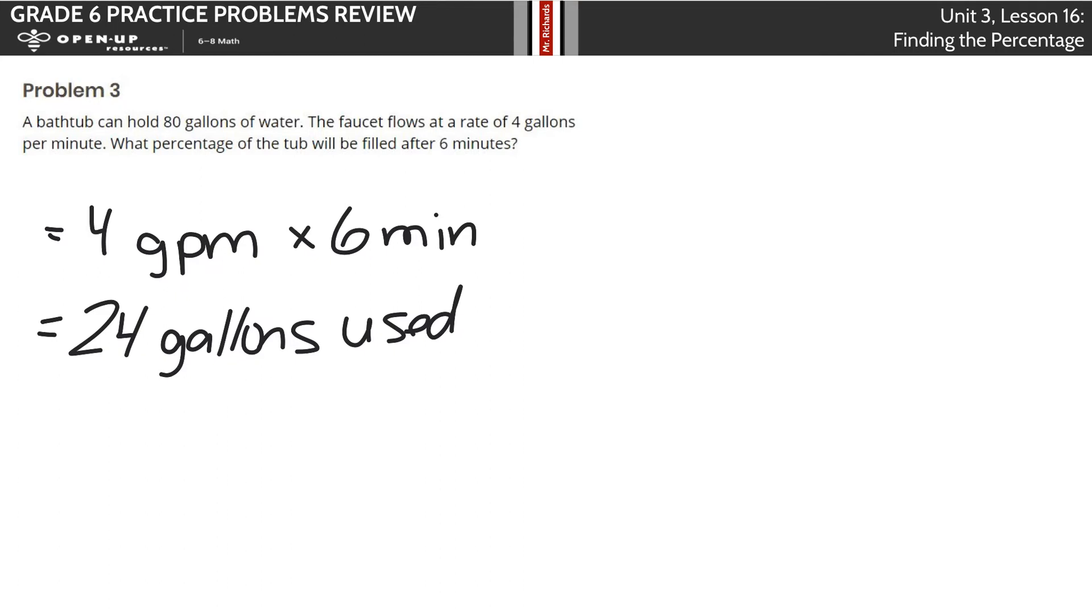What percentage of the tub will be filled? We can look at our 24 gallons used divided by our 80 gallons of water total, and we get 0.3. Just a word of advice, this is not 3%. What number is in our hundredths place? A zero. When we move this decimal point over two spots to the right, we end up with 30% as our solution. So 24 gallons out of 80 is 30% of the tub being filled in those 6 minutes.